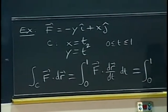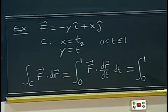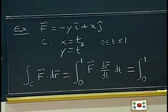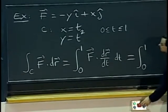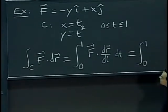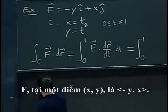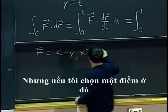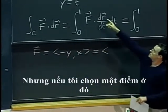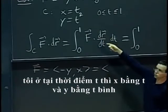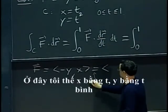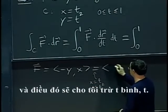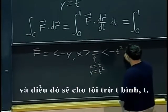That will be the integral from 0 to 1. What is f? F at a point x, y is... if I take the point where I am at time t, then x is t and y is t squared. Here I plug x equals t, y equals t squared. That will give me negative t squared and t.